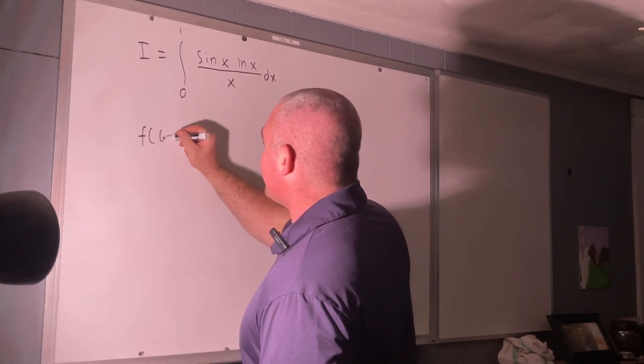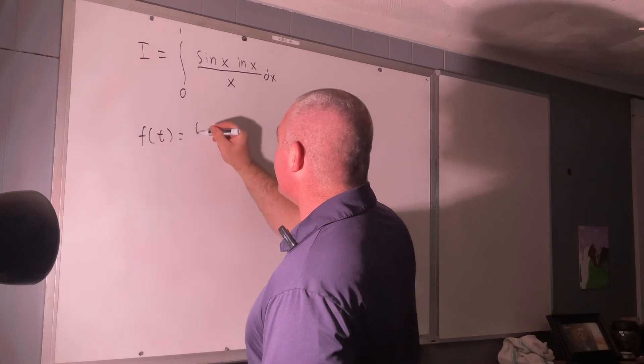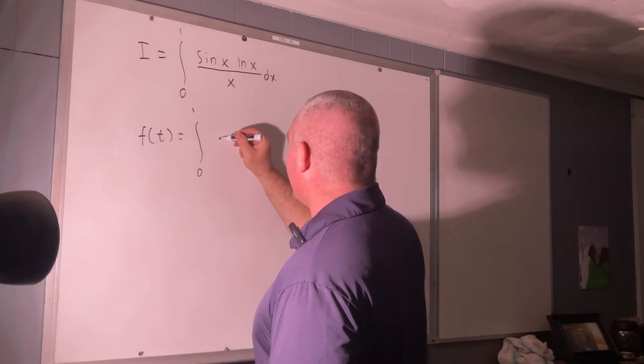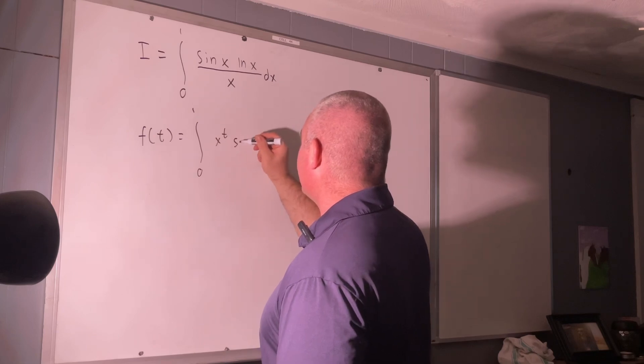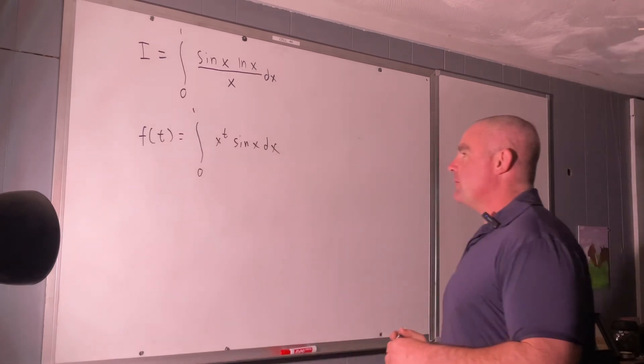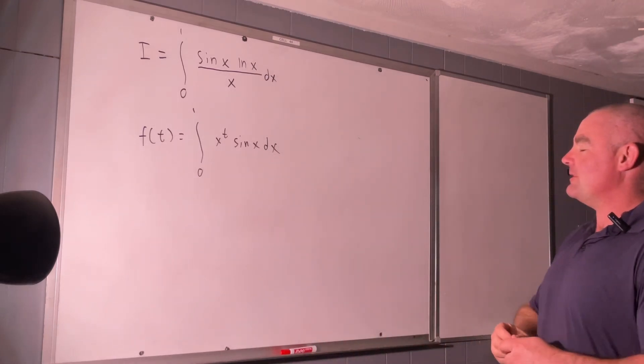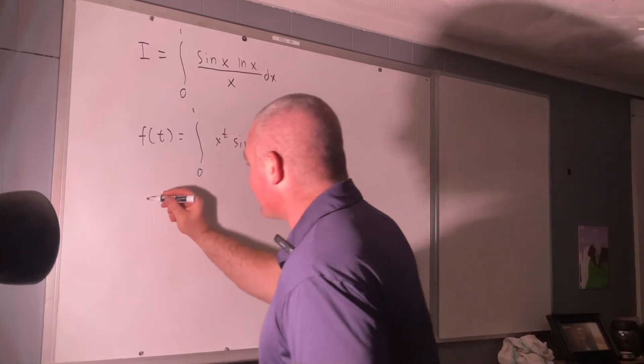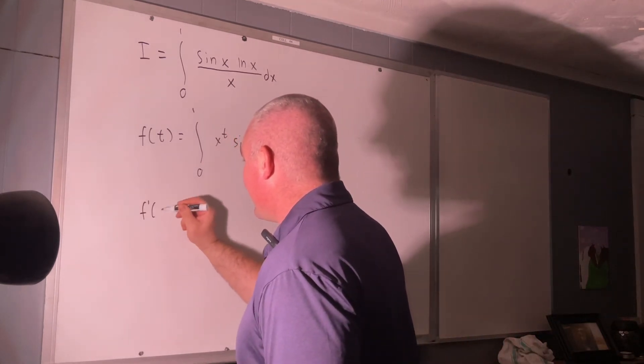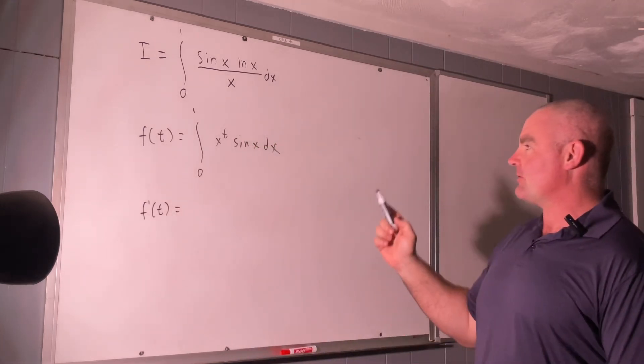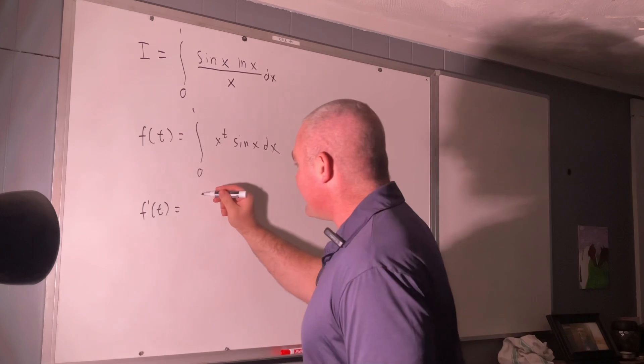I started with a function of t equal to the integral from 0 to 1 of x to the t times sin x dx. And those of you that have been watching my channel probably know why I did that. That is so that when I take a derivative of that function with respect to t, using the Leibniz rule for differentiation under the integral sign, we get this.